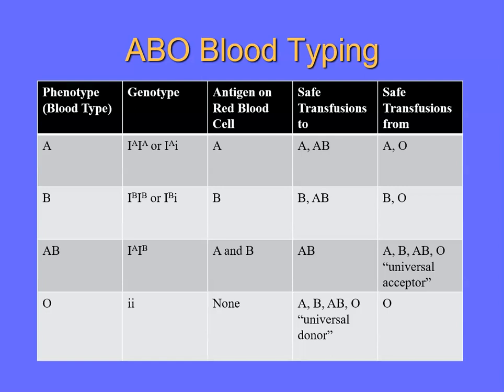Those three alleles and their different combinations in genotypes result in four phenotypes. Before this, we'd only seen three phenotypes at most. The ABO blood group is also an example of codominance because of type AB blood. So we have both codominance and multiple alleles within the ABO blood group, because the alleles for type A and type B are codominant.